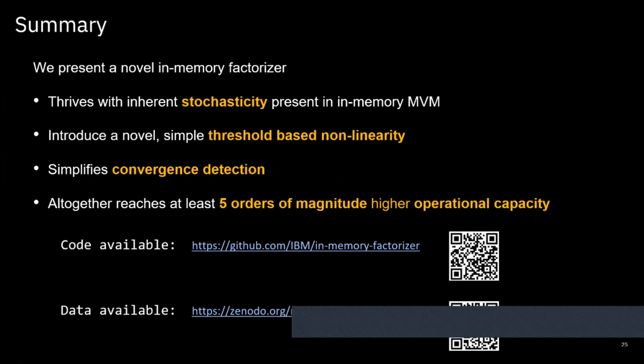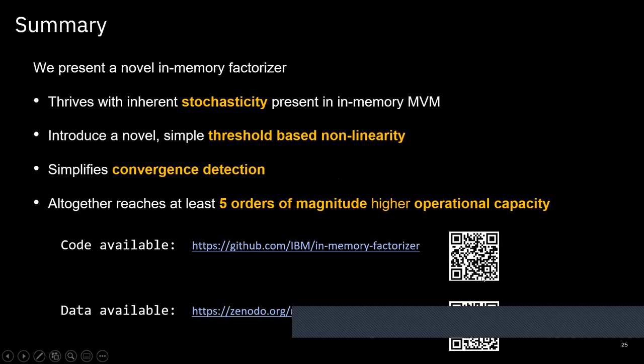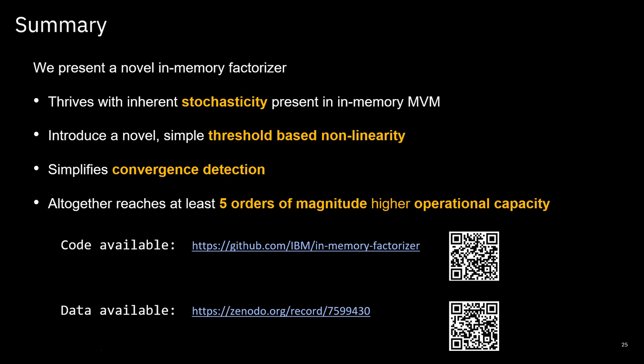To recap today's talk: we presented the in-memory factorizer, which introduces new features — inherent stochasticity, a simple threshold-based nonlinearity, and simple convergence detection — that allow us to reach higher operational capacities, at least five orders of magnitude or more. For those interested, we have code available on GitHub as well as the data dumped from our hardware — the conductance values we recorded — which may be useful for someone who wants to do further experiments.